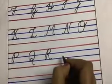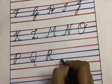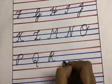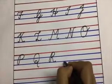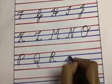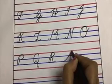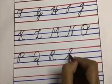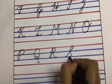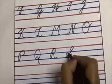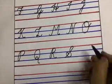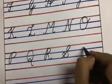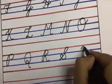Now from the third line, touch the first line, make a curve and make one S like this. This is cursive capital S. Now this is cursive capital T.